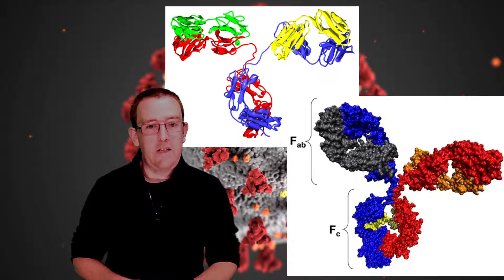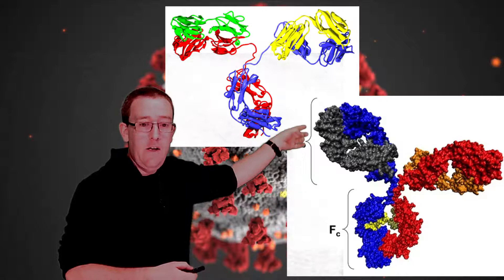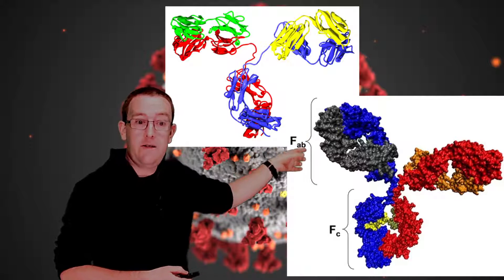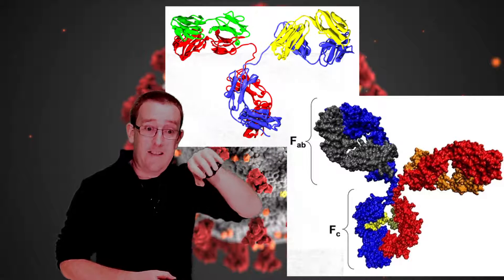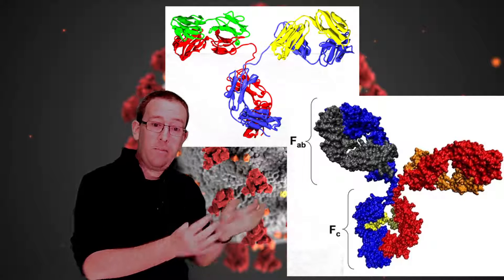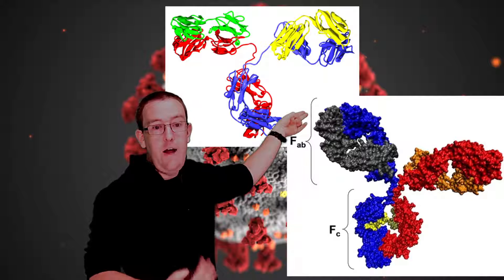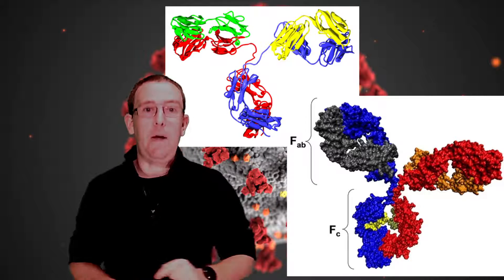If we look in even more detail, the shape is really specific. Each little blob is an amino acid. If the virus's protein has one amino acid changed, which changes the overall 3D shape of the spike protein, the antigen binding site might not fit anymore. That's what people are worried about.